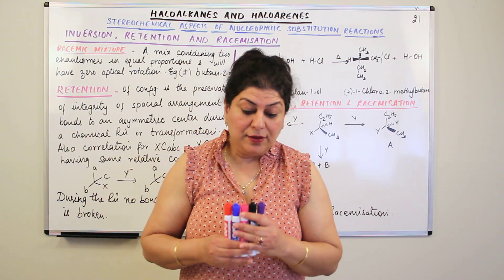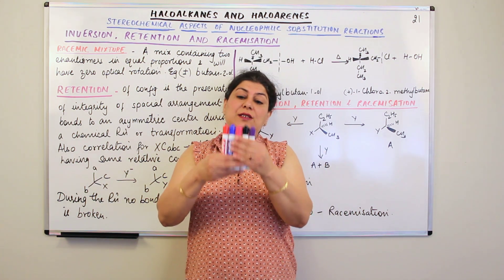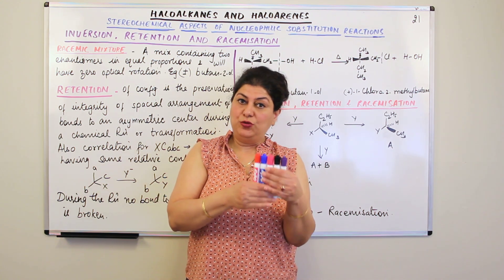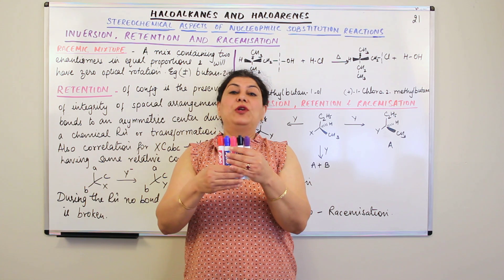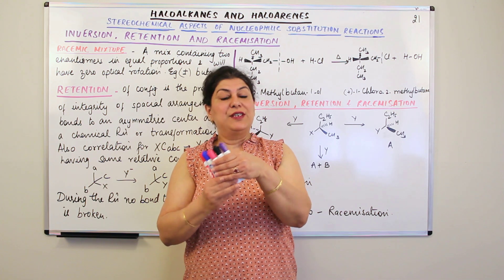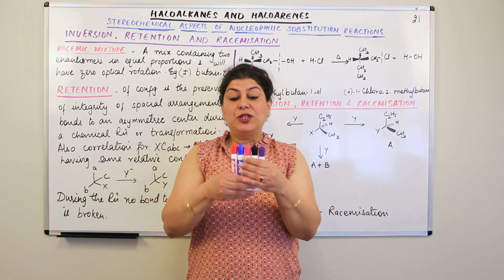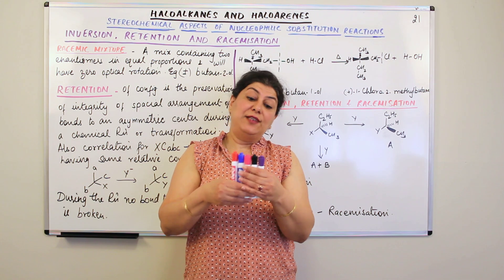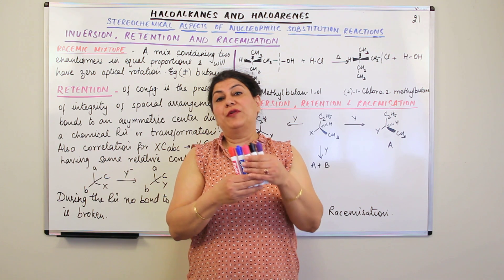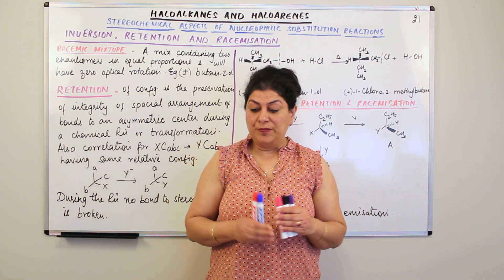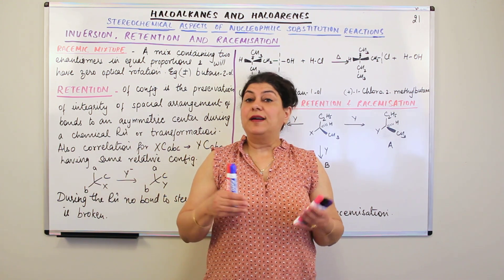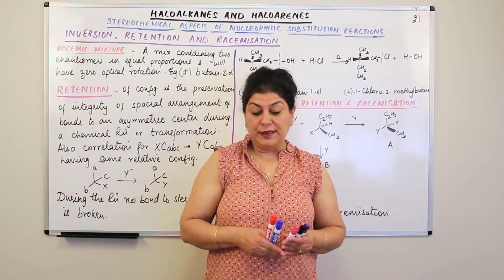Then I explained optical activity — that when you pass plane polarized light through solutions of some compounds, the plane of polarized light gets rotated either to the right or to the left. Molecules that rotate it towards the right are dextrorotatory, and those that rotate it towards the left are levorotatory. This phenomenon is known as optical activity.